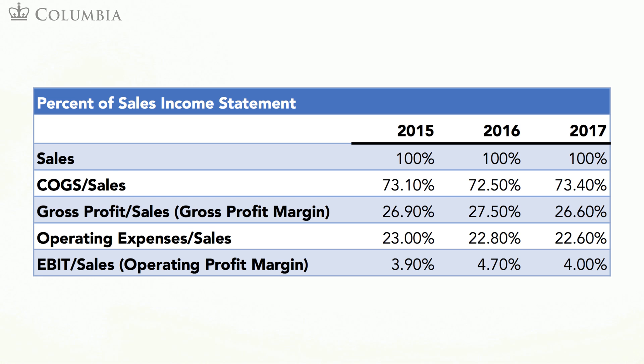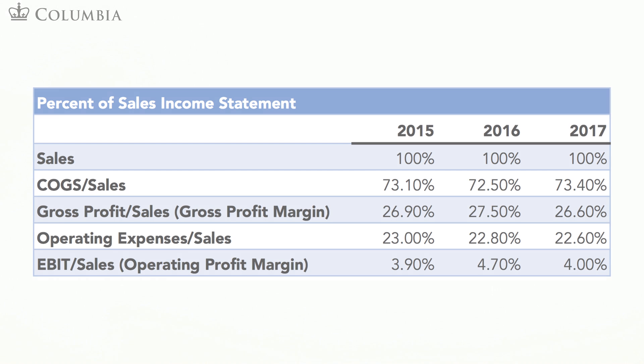This is an important ratio that informs us about the operating performance of the business. For example, in 2017, for each dollar of sales, MANOA spent 73.4 cents in COGS and a further 22.6 cents in operating expenses, leaving 4 cents in EBIT. In other words, the operating profit margin for MANOA in 2017 is 4%.